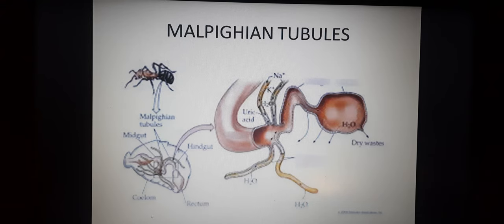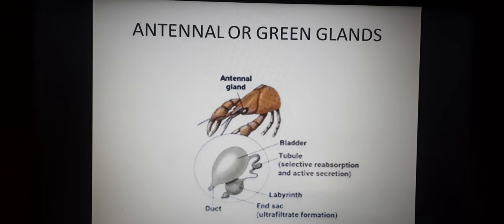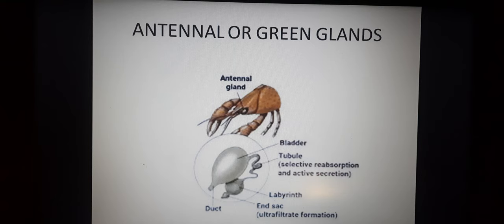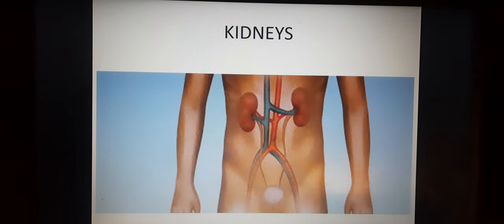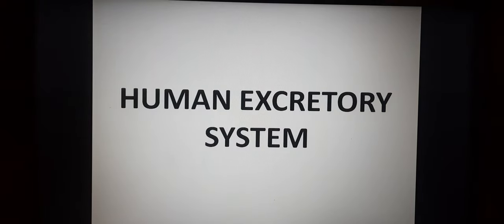Next is the green glands, also called antennal glands. This specific structure is found in prawns and lobsters, which come under arthropoda — specifically crustaceans. Their green glands are used for excretion. The final excretory organ is the kidney, which maintains osmoregulation in higher organisms. I will explain the kidney elaborately in the next section.